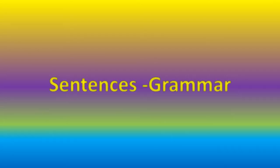Hi friends, let's learn about sentences from grammar. There are four types of English sentence: declarative, interrogative, imperative, exclamative.